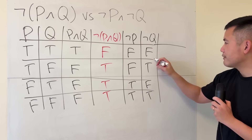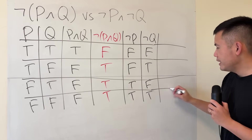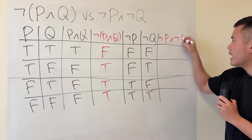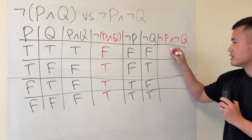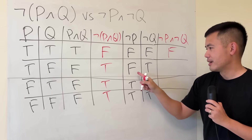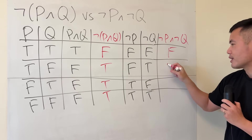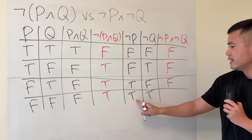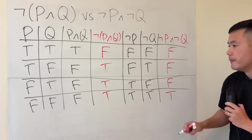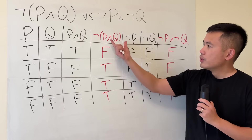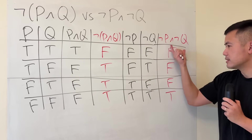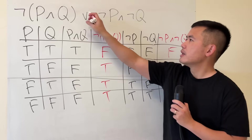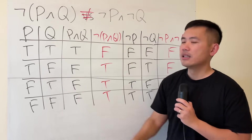Finally, we put the AND statement between not P and not Q. Both false gives false. False and true gives false. True and false gives false. True and true gives true. As you can see, this column is not exactly the same as the not (P and Q) column, because two entries are different. So they are not logically equivalent.